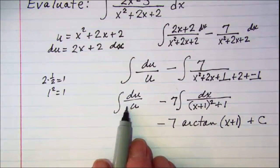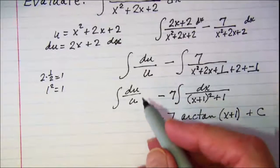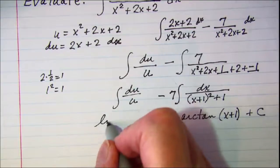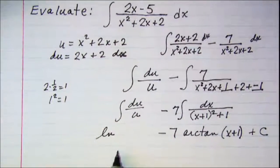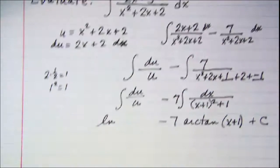And then this one the integral of 1 over u du is ln u which then I can sub in x squared plus 2x plus 2. So that's ln of x squared plus 2x plus 2.